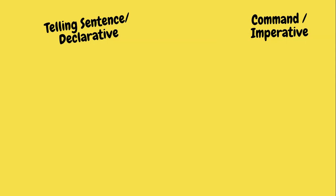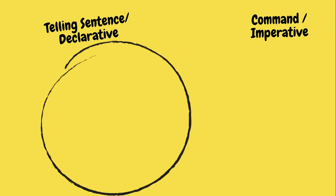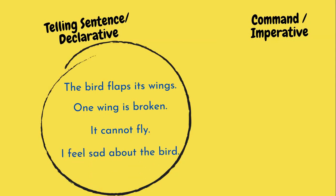I will give you the example of each. Telling sentences are: the bird flaps its wings. One wing is broken. It cannot fly. I feel sad about the bird. Those four sentences only just give information.